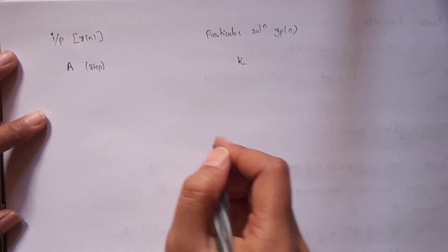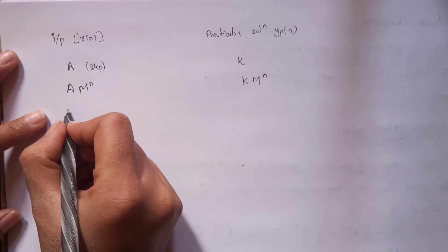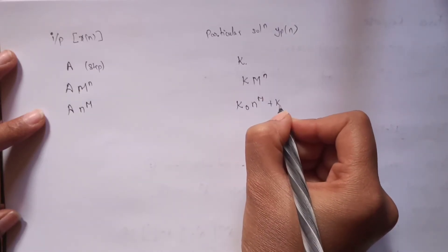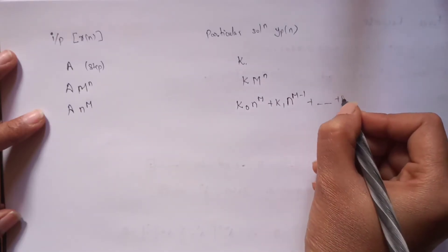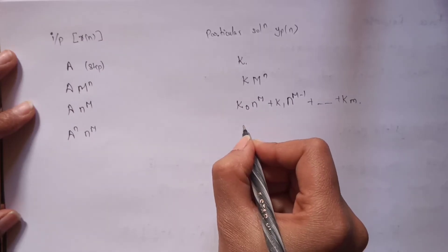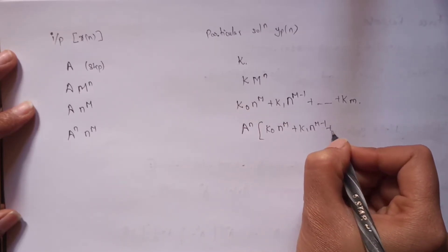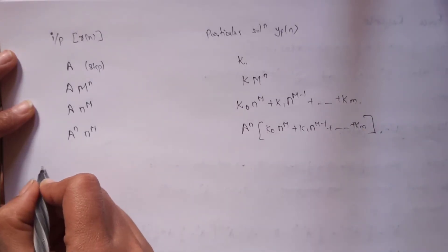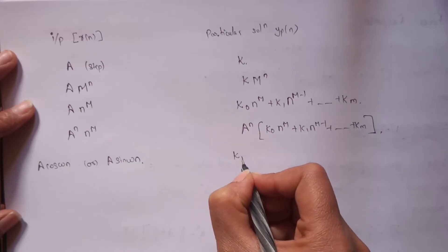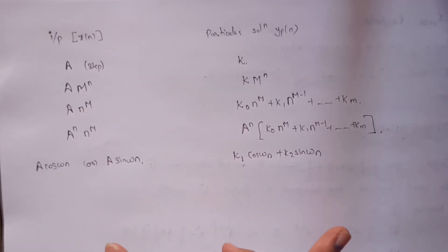From the table: if the input is a constant (step), the particular solution is k. If the input is a*m^n, the solution is k*m^n. If the input is a*n^m, the output is k0*n^m + k1*n^(m-1) + ... + km. If the input is a^n * n^m, we multiply accordingly. If the input is a*cos(ωn) or a*sin(ωn), the particular solution is k1*cos(ωn) + k2*sin(ωn).